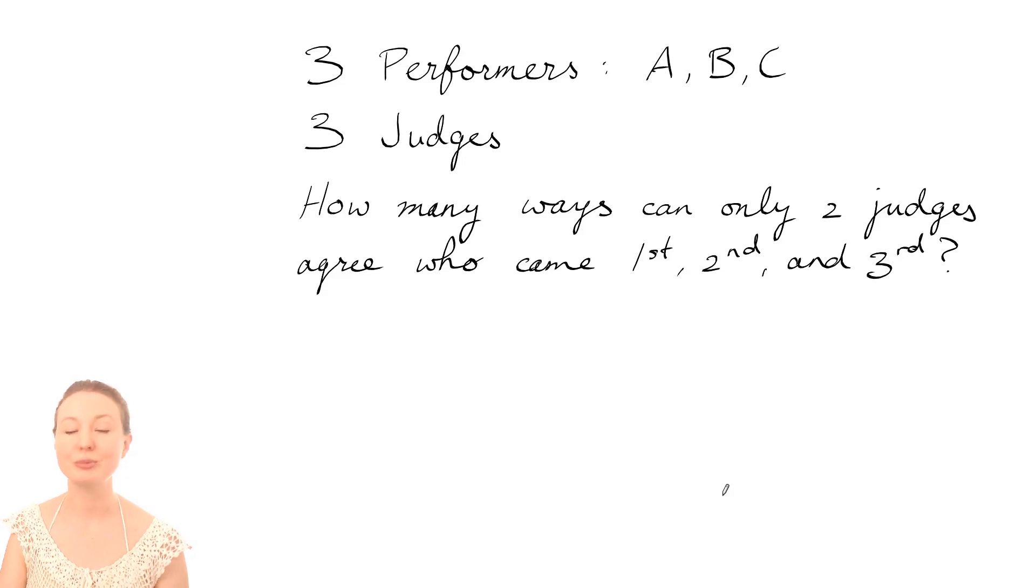In a talent quest there are three performers called A, B and C, and there's three judges that have to rank the performers from first, second, third. The question is: how many ways can just two of the judges agree on the ranking while the remaining judge disagrees? You might like to pause the video now and give that question a go.